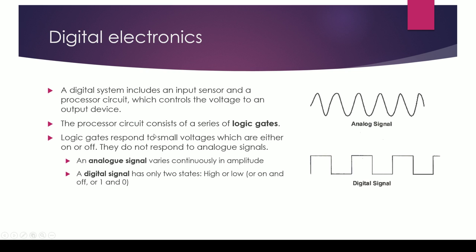Digital electronics. A digital system includes an input sensor and a processor circuit which controls the voltage to an output device. So you always have an input and an output.